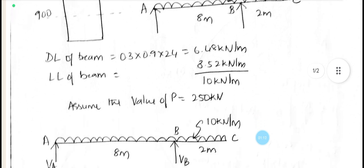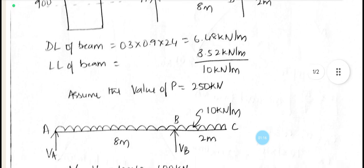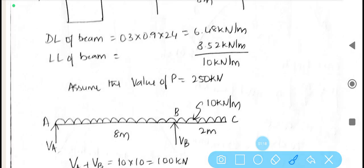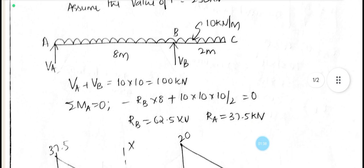Let us calculate what is dead load. As usual it is area into density. Live load is given, total is 10. So in the absence of any pre-stated data, we can directly assume if the number of unknowns are higher. In order to simplify, we make use of certain assumptions, that is P is equal to 250 kN.